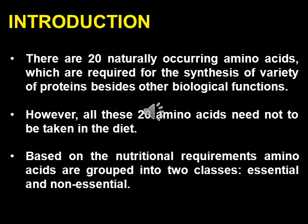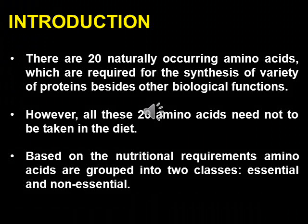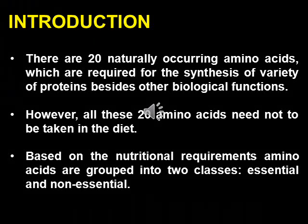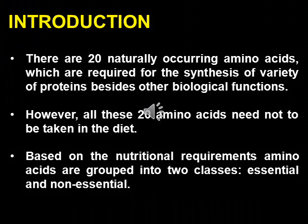As we all know, L-lysine is an amino acid. So let's start our discussion with amino acids. There are 20 naturally occurring amino acids, which are required for the synthesis of a variety of proteins besides other biological functions. However, all these 20 amino acids need not to be taken in the diet. Based on the nutritional requirements, amino acids are grouped into two classes: essential and non-essential.